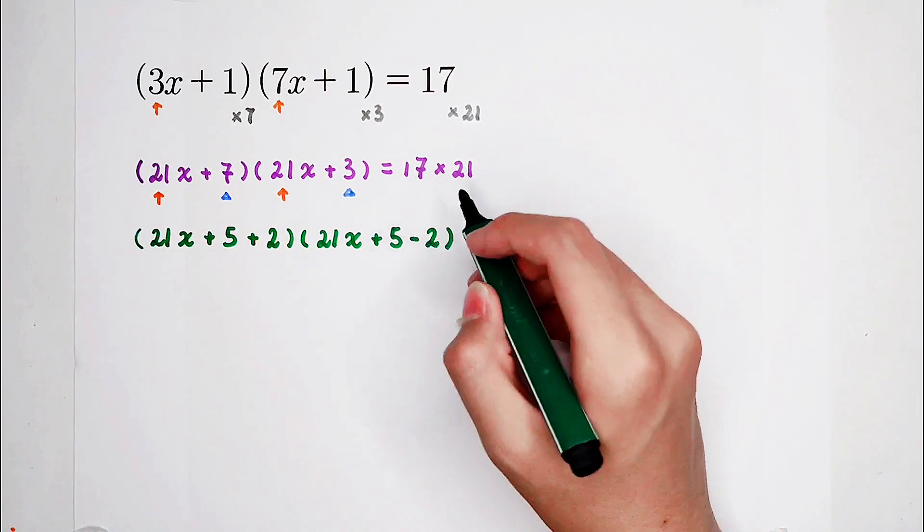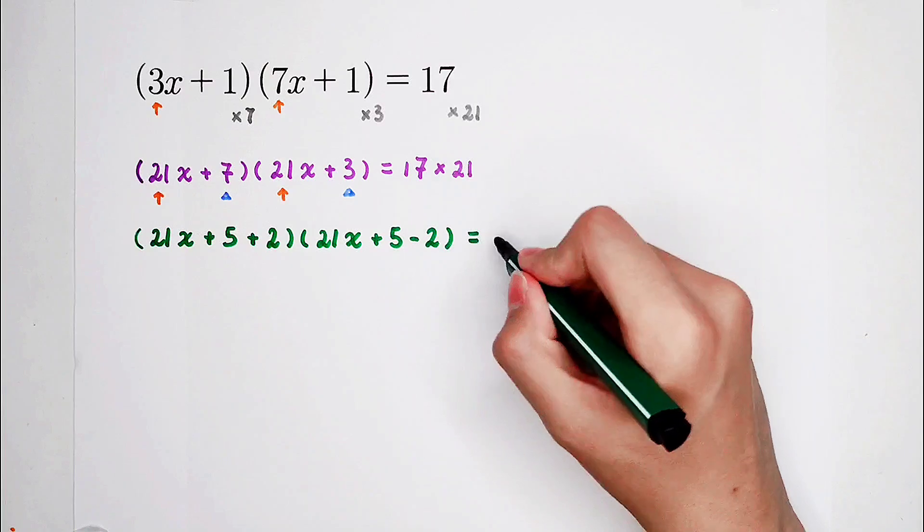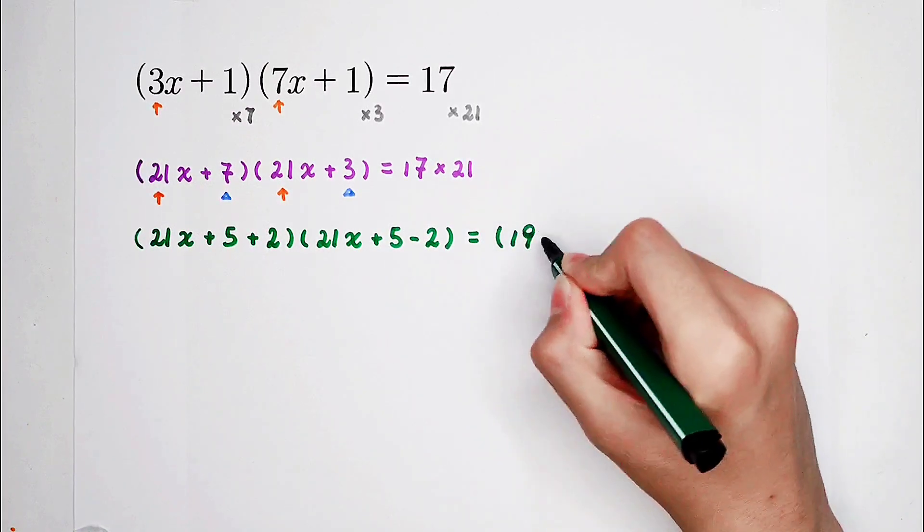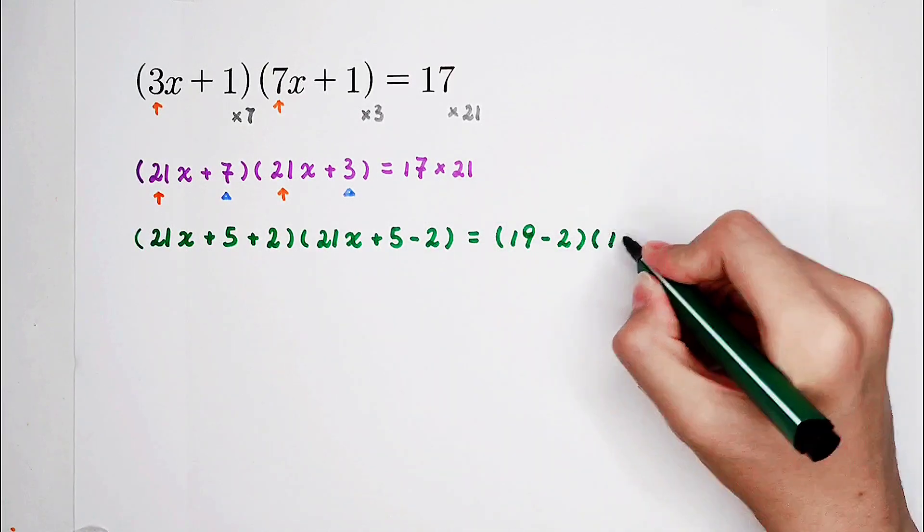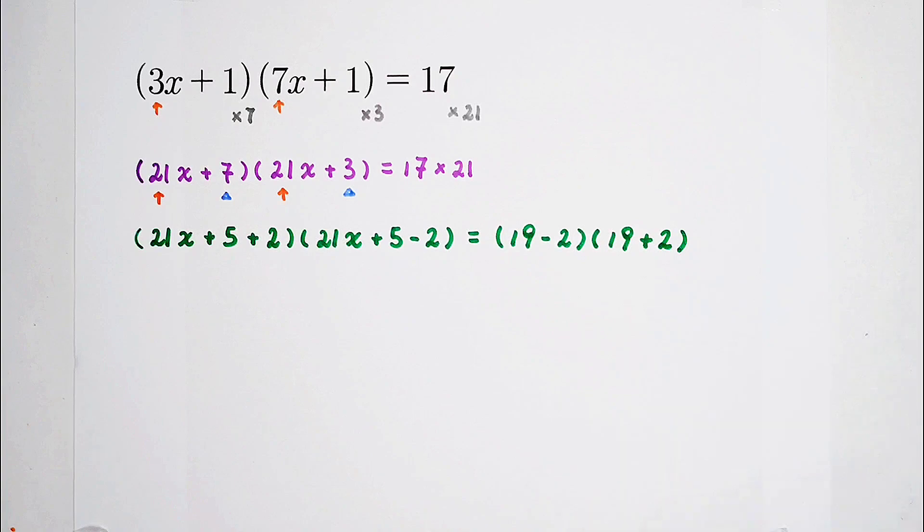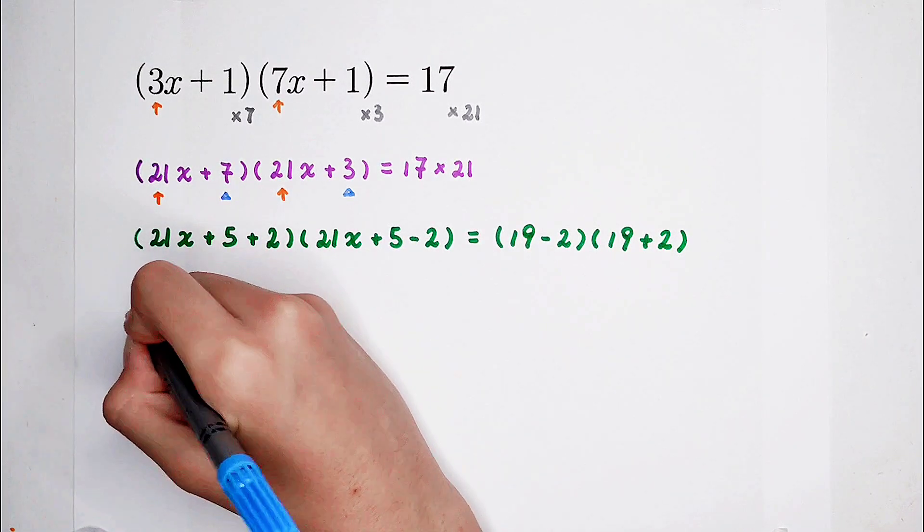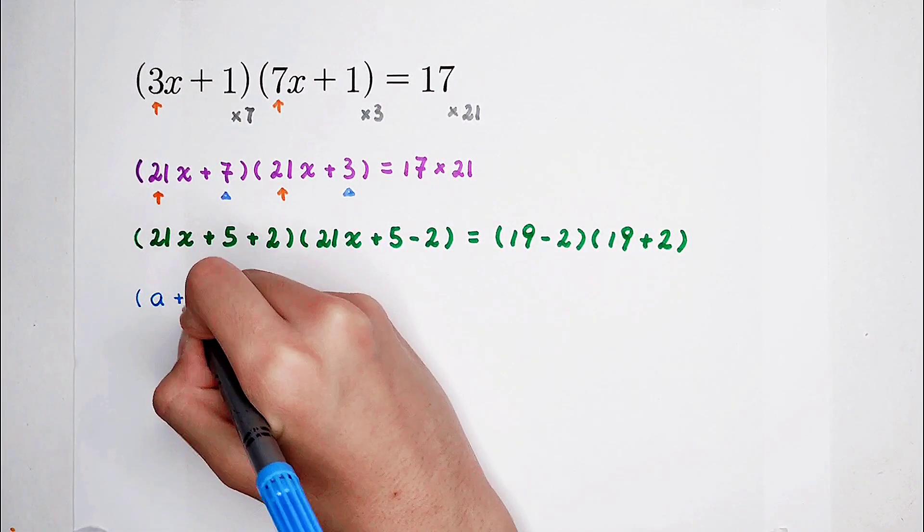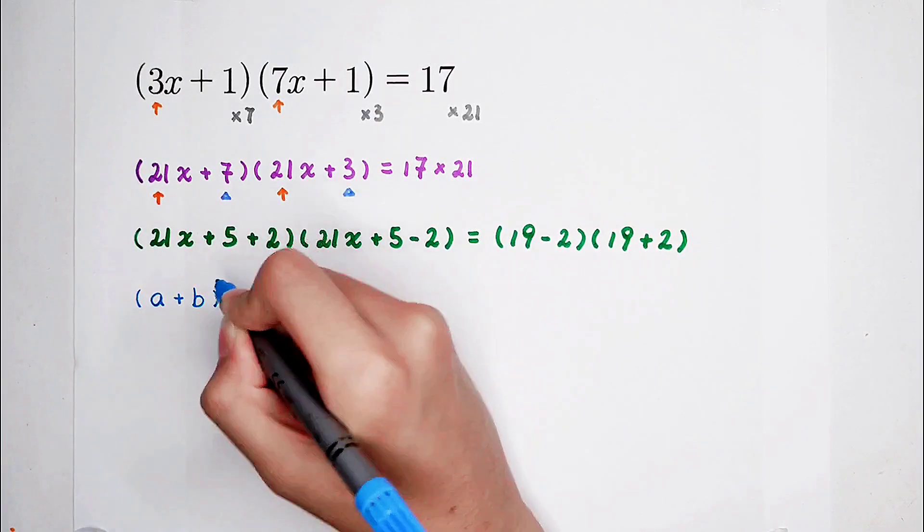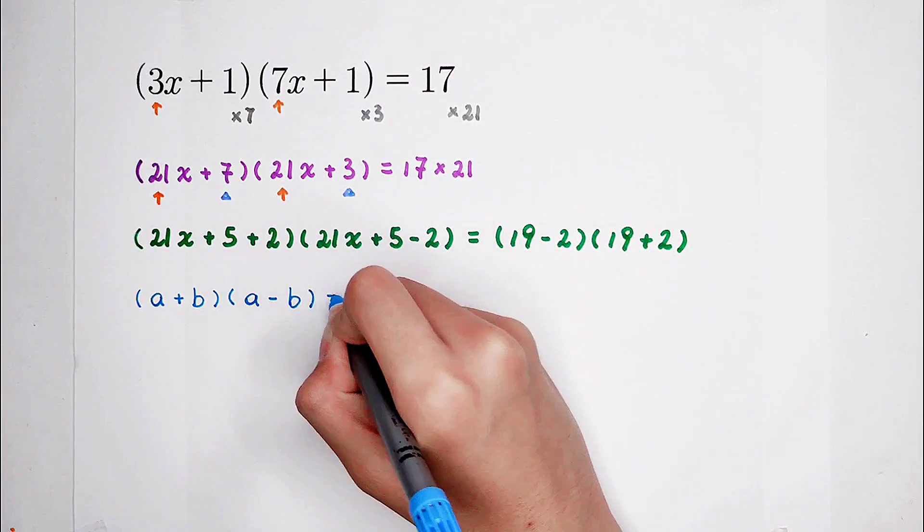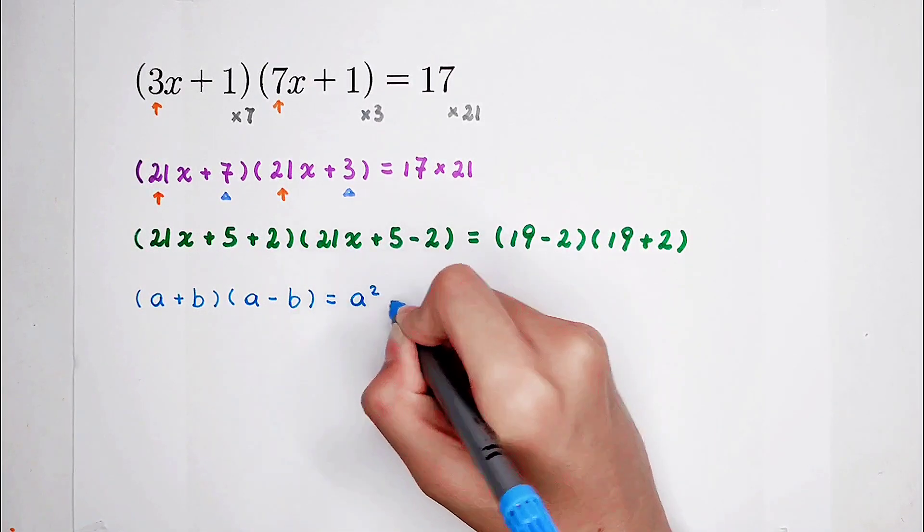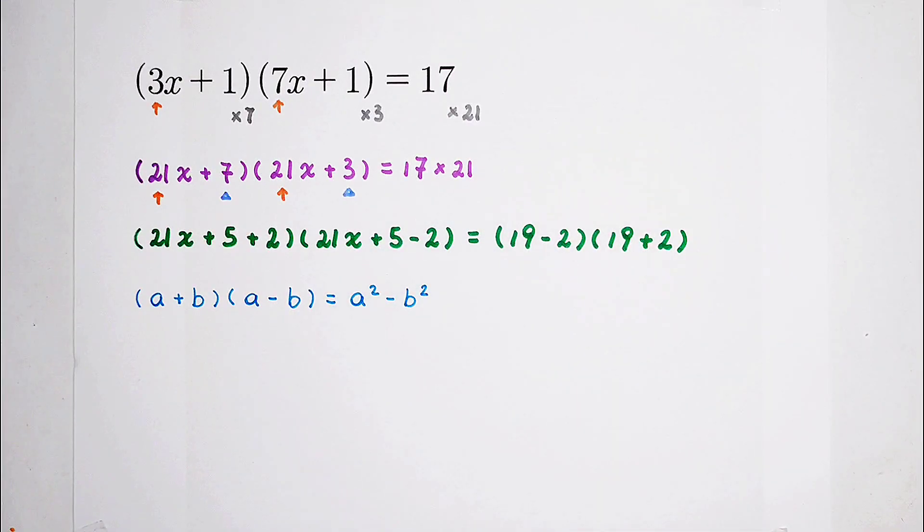And the right-hand side as well. The mean of 17 and 21 is 19. So 17 can be written as 19 minus 2 and 21 as 19 plus 2. So nice, isn't it? We can use this formula, this wonderful formula. A plus B then times A minus B equals A squared minus B squared. The third binomial formula.